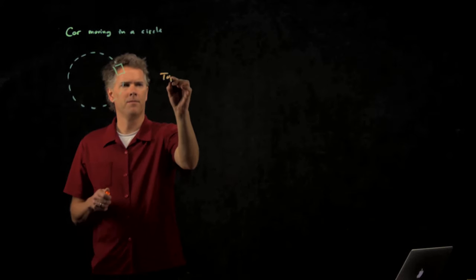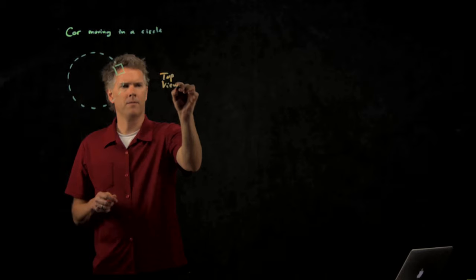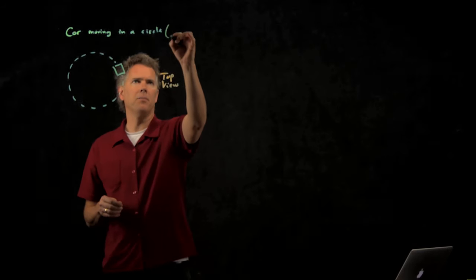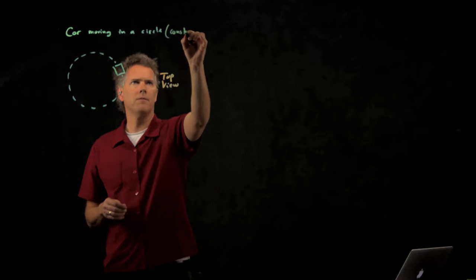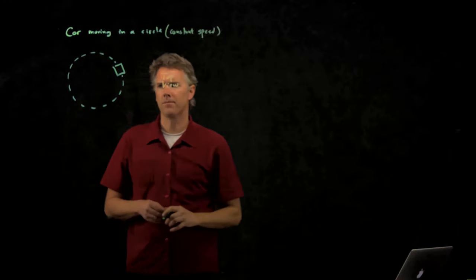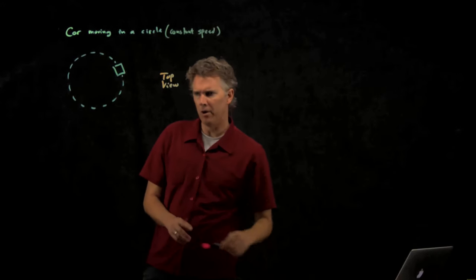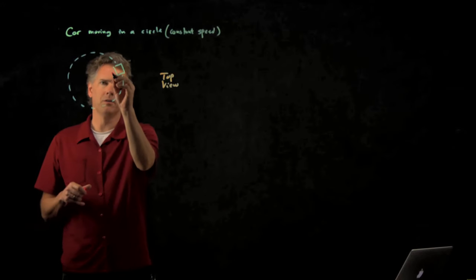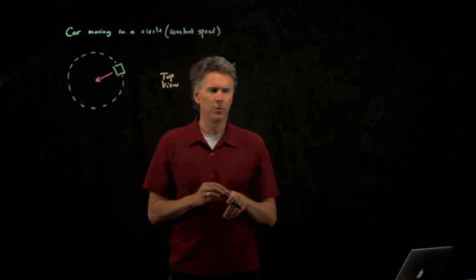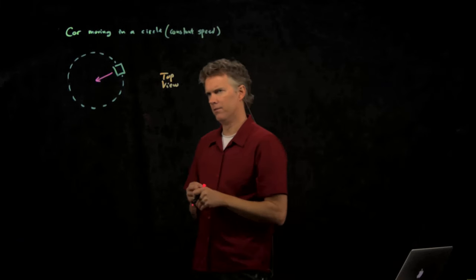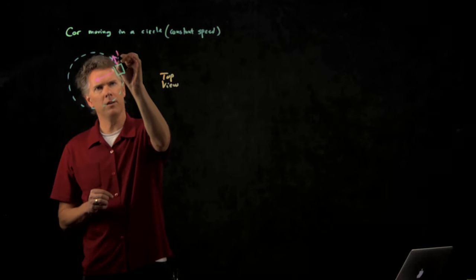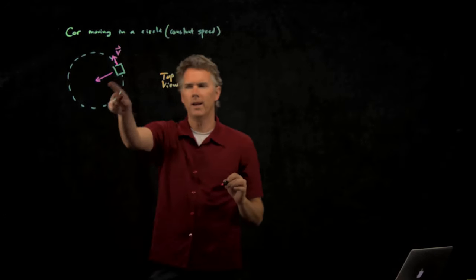If it's moving around at constant speed, then there is a force that is keeping it in that circle. We know that that force has to be pointed directly towards the center of the circle, even though the car is moving in this direction. What is that force?